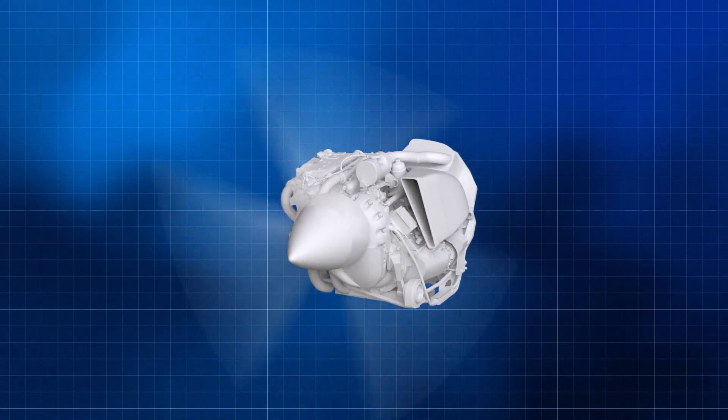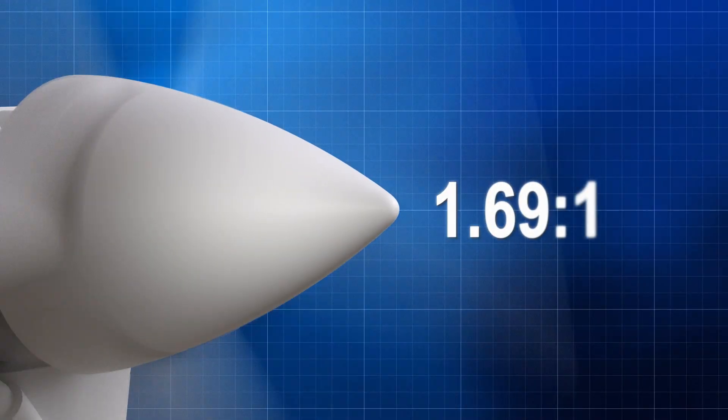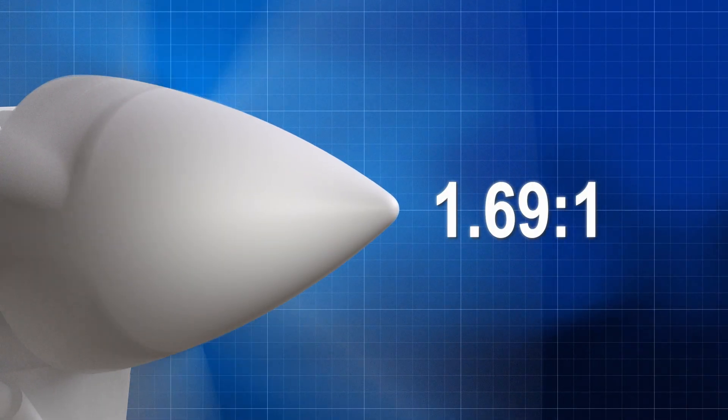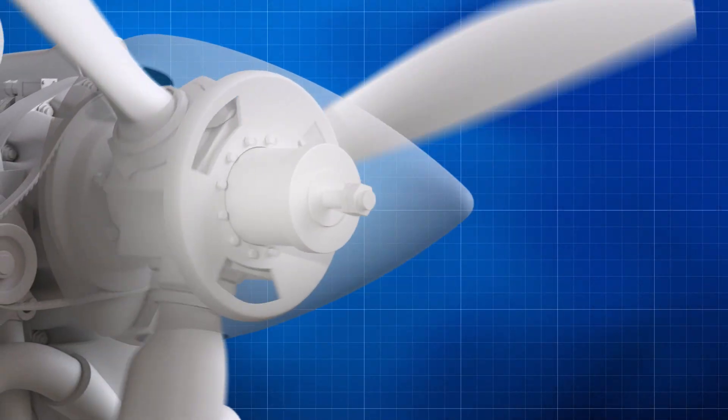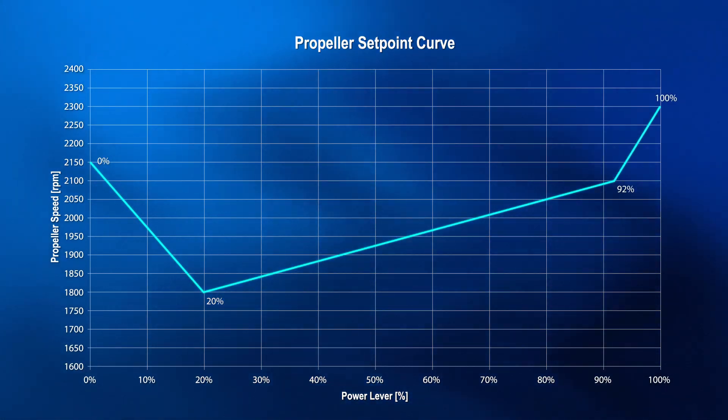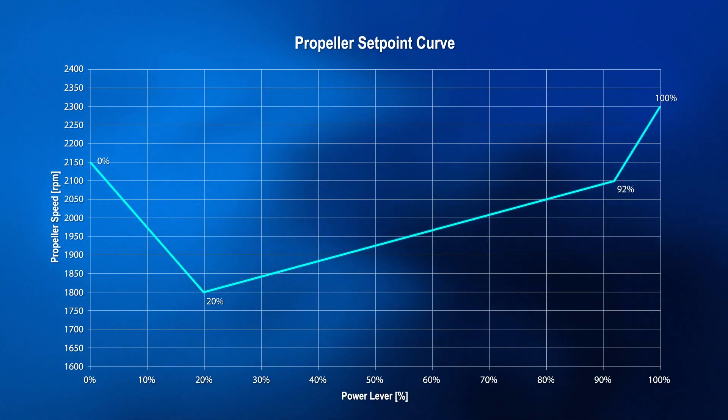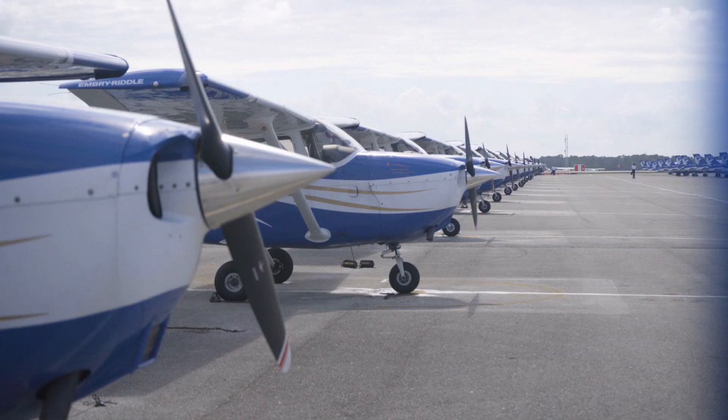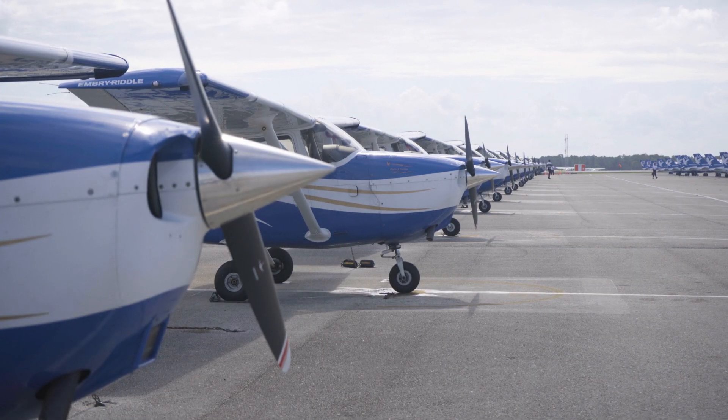Each propeller is geared down with a ratio of 1.69 to 1 as the engine turns at a higher RPM than the propeller. Depending on what percentage the pilot chooses to set the engine's power level at, the ECU system will adjust the propeller RPM accordingly.